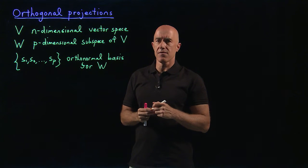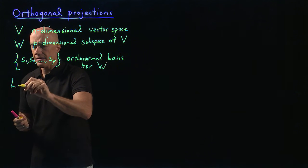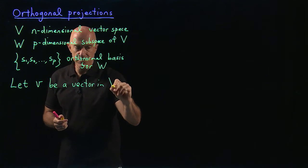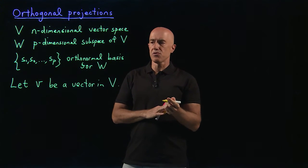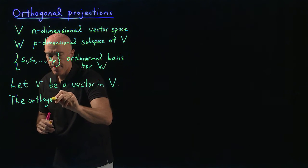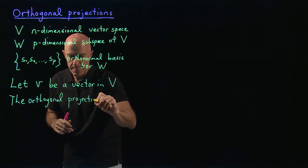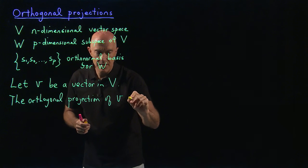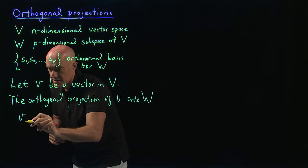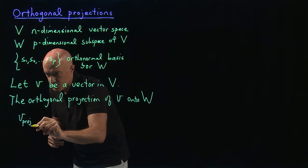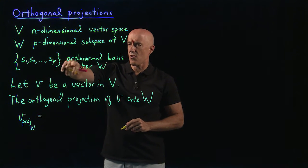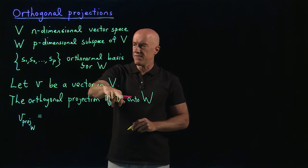So now what is the meaning of orthogonal projection? Let little v be a vector in the big vector space. The orthogonal projection of little v onto the subspace W is given by the following — I'll use this notation for v projected onto W, where s are the orthonormal basis for W.